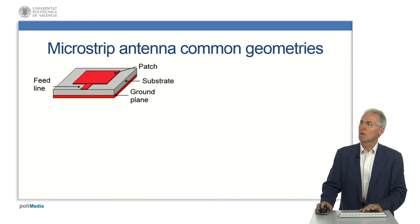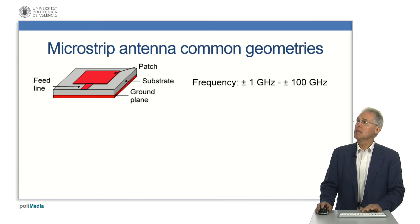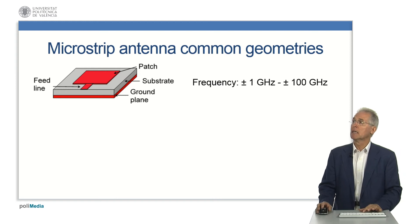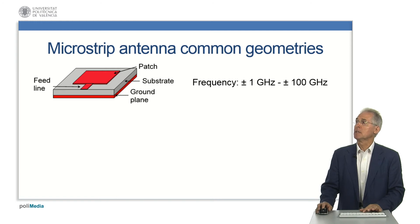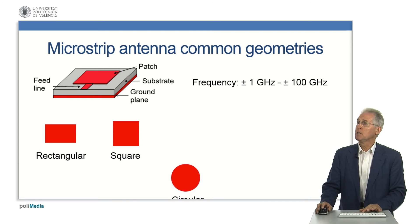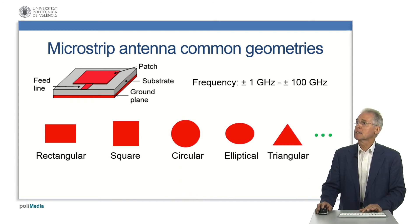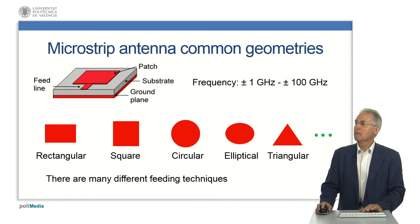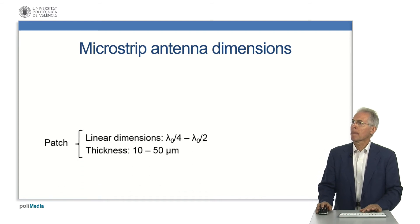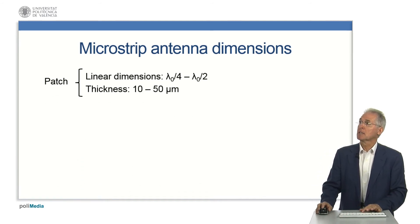The most simple form of a microstrip antenna consists of a metallic patch printed on a dielectric substrate backed by a metallic ground plane. A feed supplies RF power to the patch. The microstrip antenna is a typical microwave antenna used roughly from 1 GHz up to 100 GHz. There are many simple canonical geometries such as rectangular, square, circular, elliptical, triangular, and some very complex non-canonical ones. As we will see later, there are many different feeding techniques. The patch has linear dimensions in the range lambda-0 over 4 to lambda-0 over 2, and thickness of 10 to 50 micrometers.